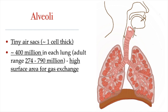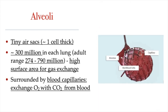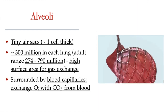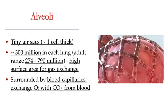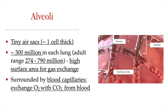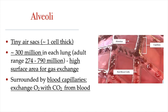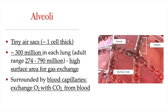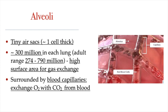What this huge number of alveoli does is provide the lungs with a huge surface area for gas exchange. The more alveoli, the more gas exchange that can happen at the lungs. This exchange of oxygen and carbon dioxide gas can happen because the alveoli are surrounded by blood capillaries. So the alveoli are the functional units of the lungs that provide a high surface area for gas exchange.